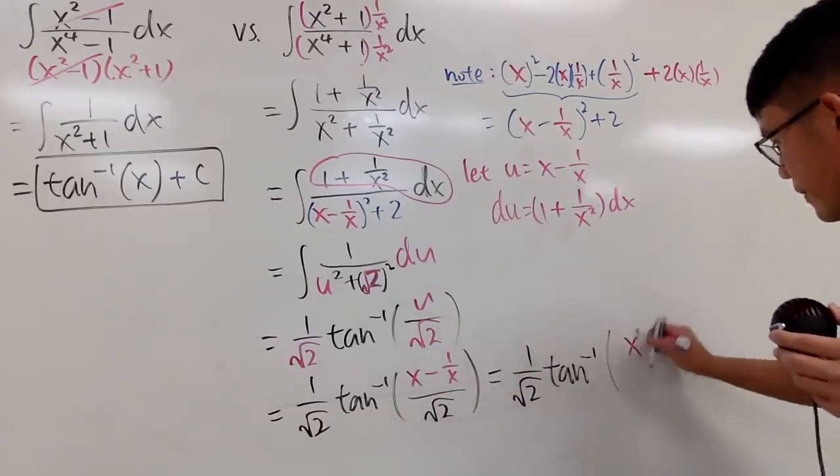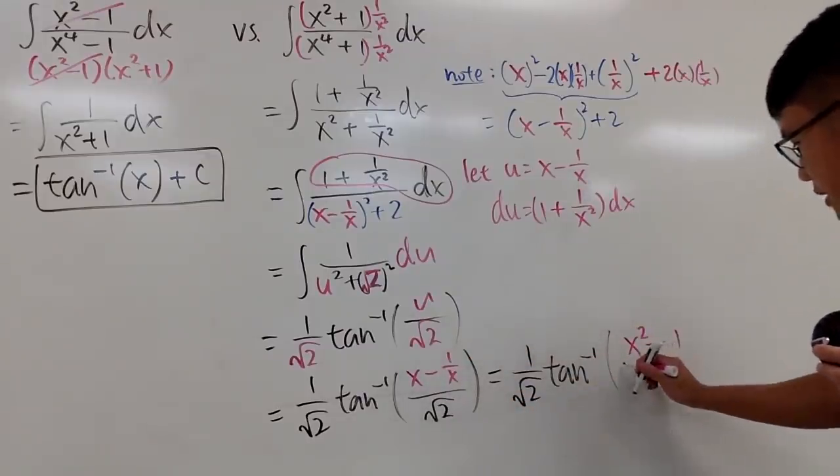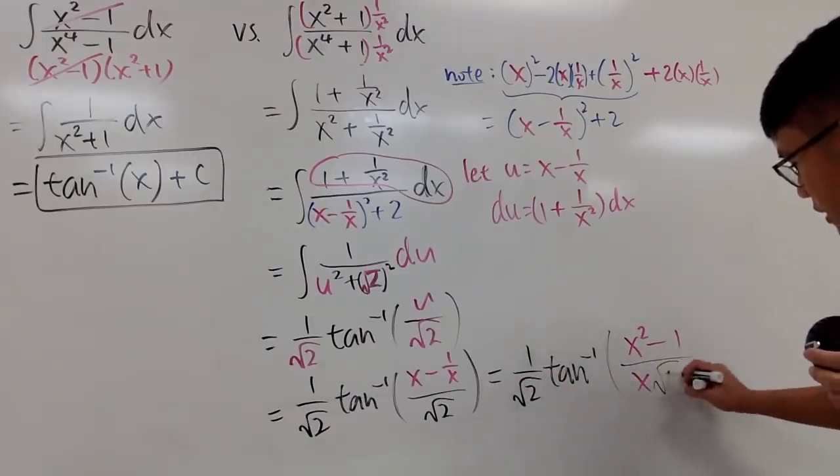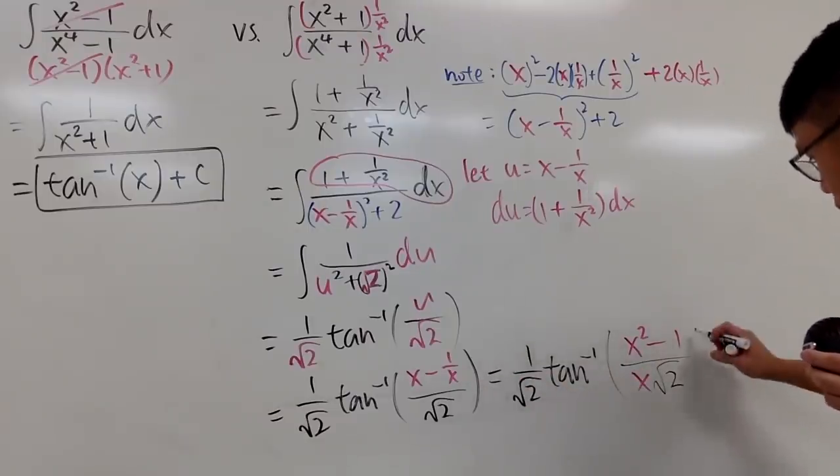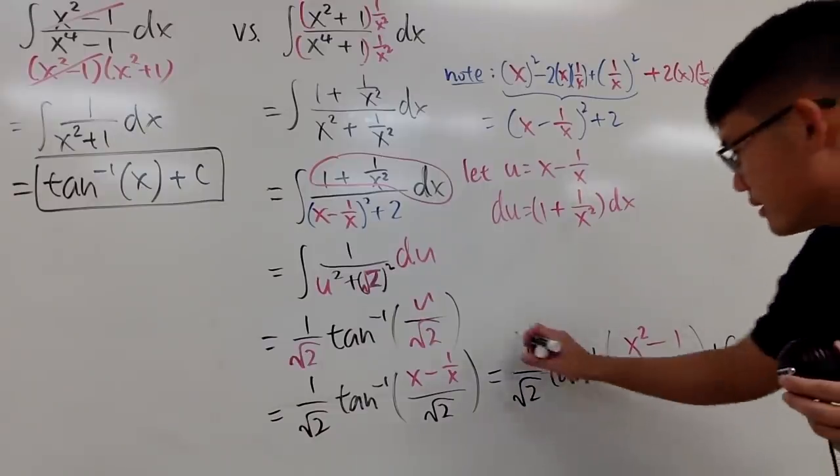Over x I'll put it down in the denominator as well, and then we have √2 in the denominator as well. With that, we are done, so I'll say plus C. Case closed.